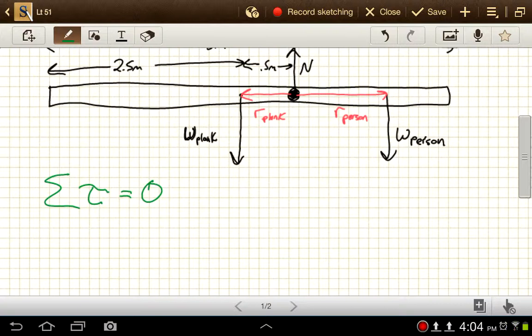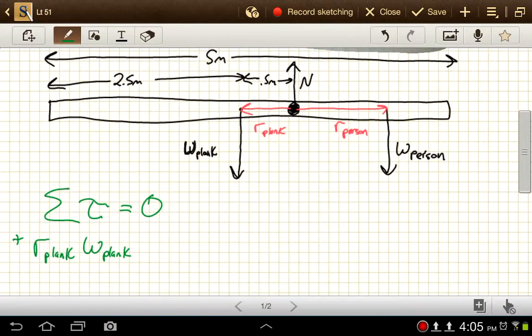So now we've got a couple of terms here. We'll have the r for the plank times the weight for the plank in the counterclockwise direction. And if you curl your fingers around on the right hand in the counterclockwise direction, your thumb points upward. So we would usually say that's a positive torque. And then for the other direction, this weight force is trying to make it rotate clockwise. If you curl your fingers of your right hand around clockwise there, your thumb points downward. So we'd usually call that a negative torque. And that'll be r to the person times the weight of the person. And that has to equal zero.